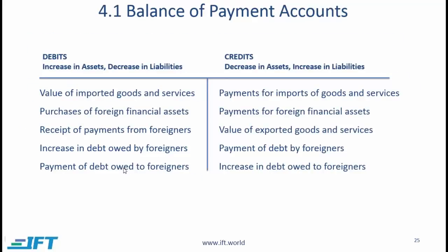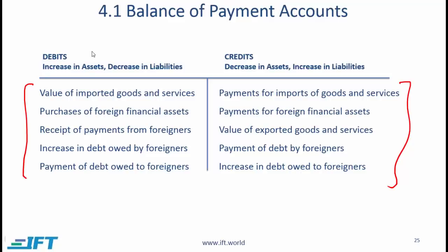Section 4.1 identifies the major balance of payment accounts, which are shown here. The curriculum talks about debits and credits, but I don't think you need to go into the details of debits and credits, because if this material has not been emphasized in FRA, I cannot imagine the CFA Institute giving you a question on debits and credits in economics. Nevertheless, just to understand the basic bookkeeping, let's consider an example.